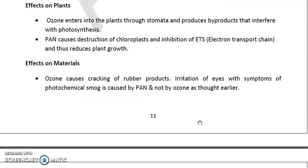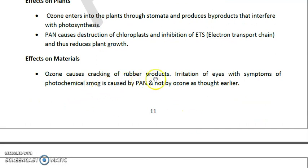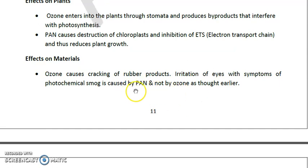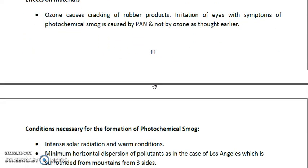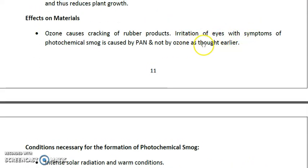Regarding the effects of photochemical smog on materials: ozone causes cracking of rubber products through ozonolysis with hydrocarbons. Eye irritation is actually the first symptom of photochemical smog, and it is caused by PAN — not ozone as researchers earlier thought. PAN is the component of photochemical smog responsible for eye irritation, which is why it is called a lacrimatory compound.